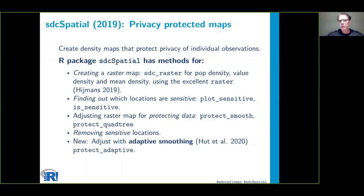sdcSpatial is a package to create density maps that protect privacy of individual observations. There are several methods, for example, for creating raster maps for population density, value density, and mean density. There are methods for finding out which locations are sensitive, so reveal privacy-sensitive information. And of course it includes some methods for protecting data: protect_smooth for smoothing data, protect_quadtree, and removing sensitive locations from your map.